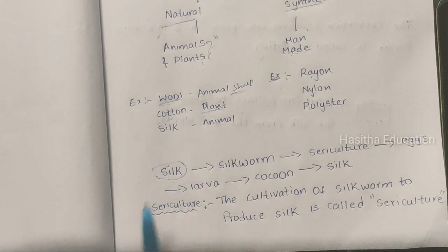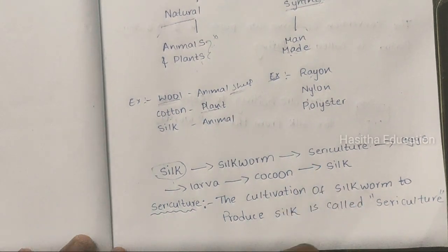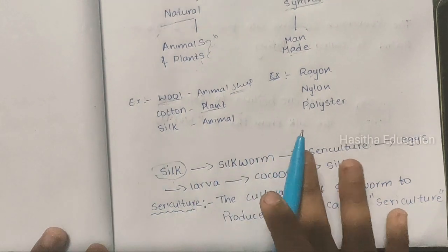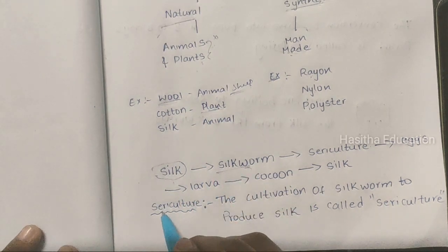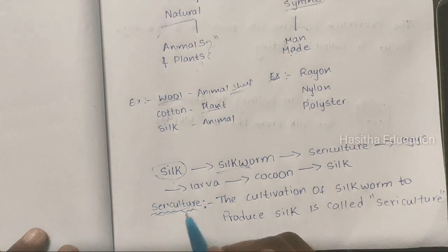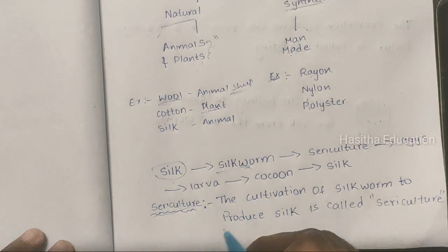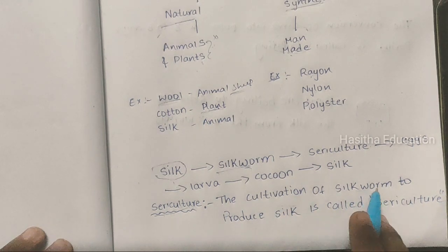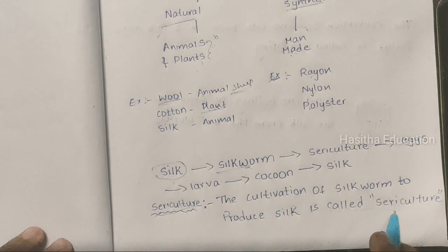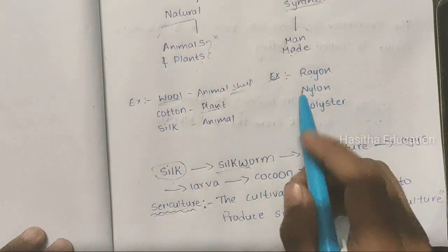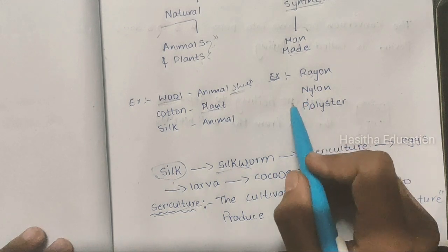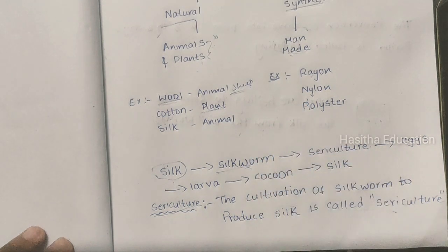Now we will learn about silk — where it comes from and what is the process to get silk. Silk is a very expensive, smooth, and really strong fabric. Silk is obtained from a silkworm. Have you ever heard about sericulture? The cultivation of silkworm to produce silk is called sericulture. The tiny eggs of the silk moth are incubated until they hatch into larvae.